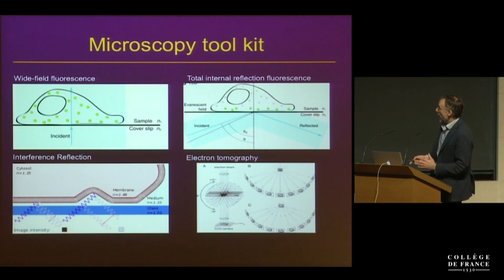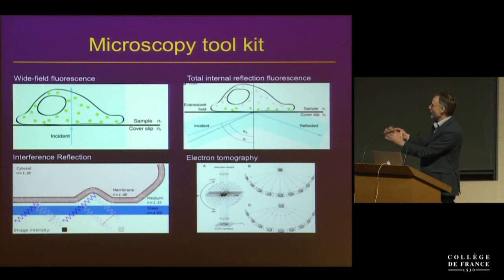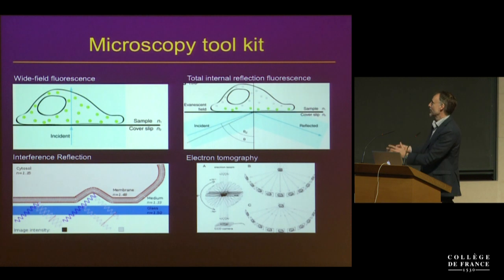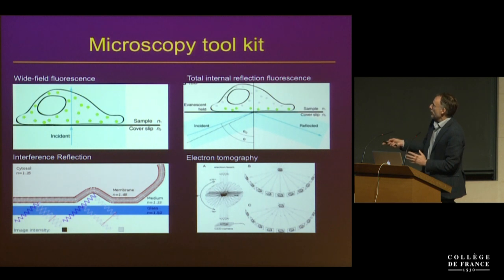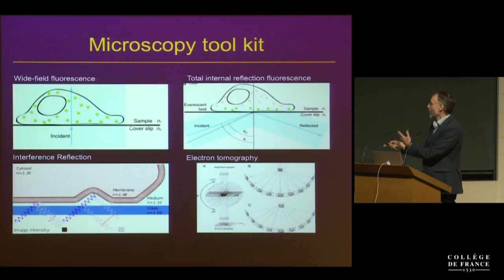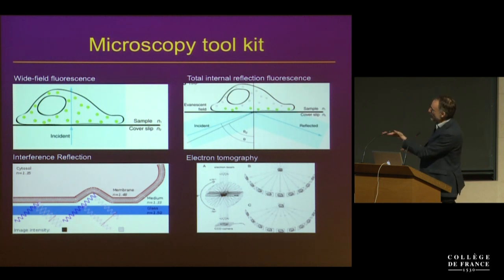In terms of imaging technologies we can use with this system, one of the most basic ones we started with was wide-field fluorescence — really the most simple conventional optics where you illuminate everything, capture it with one focal plane, and form an image with a camera. With the supported bilayer, a lot of our fluorescent signal was right in that interface — the laterally mobile fluorescently labeled MHC-peptide complexes and ICAM-1 — so our sample was planar and accessible to this imaging. We would get a very sharp single image plane of fluorescence even with this simple optical method.